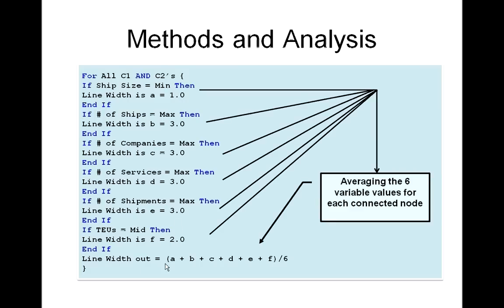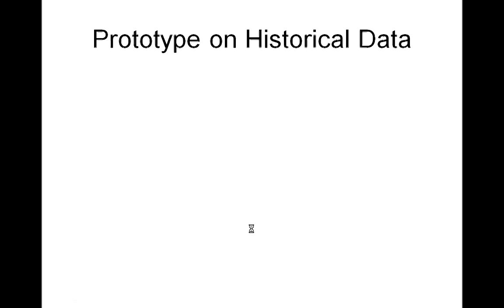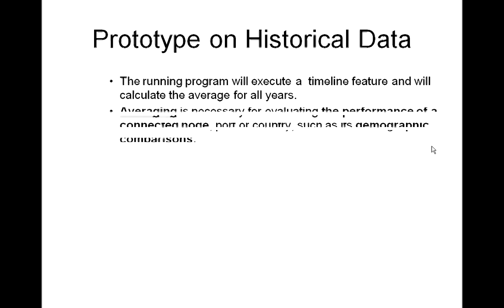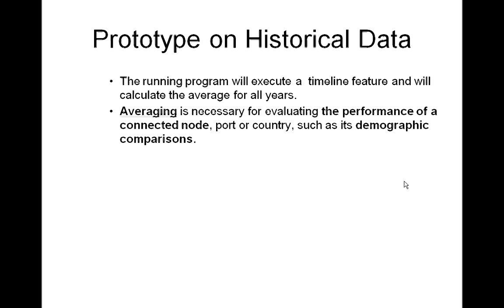Finally, the final line weight variable averages the deduced values to obtain a final weight for the connected node or country. The running program will execute a timeline feature and will calculate the average for all years.